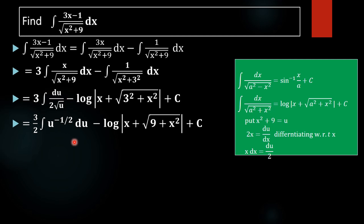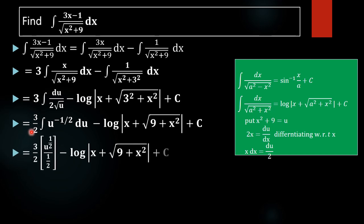Integrating u raised to minus half gives u raised to minus half plus 1, divided by minus half plus 1, which is u raised to half divided by half, plus c.